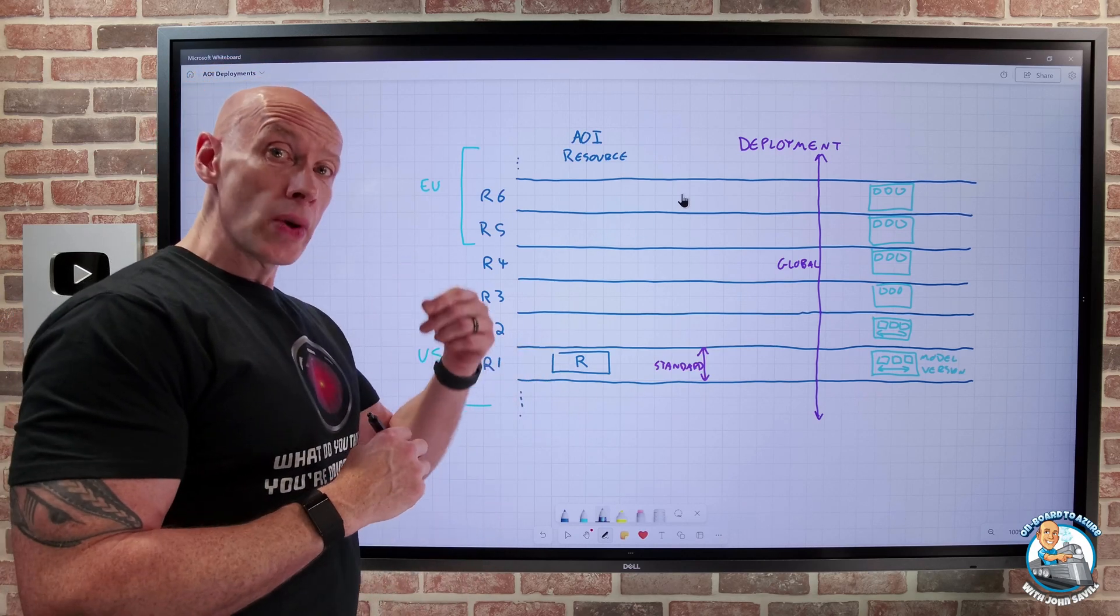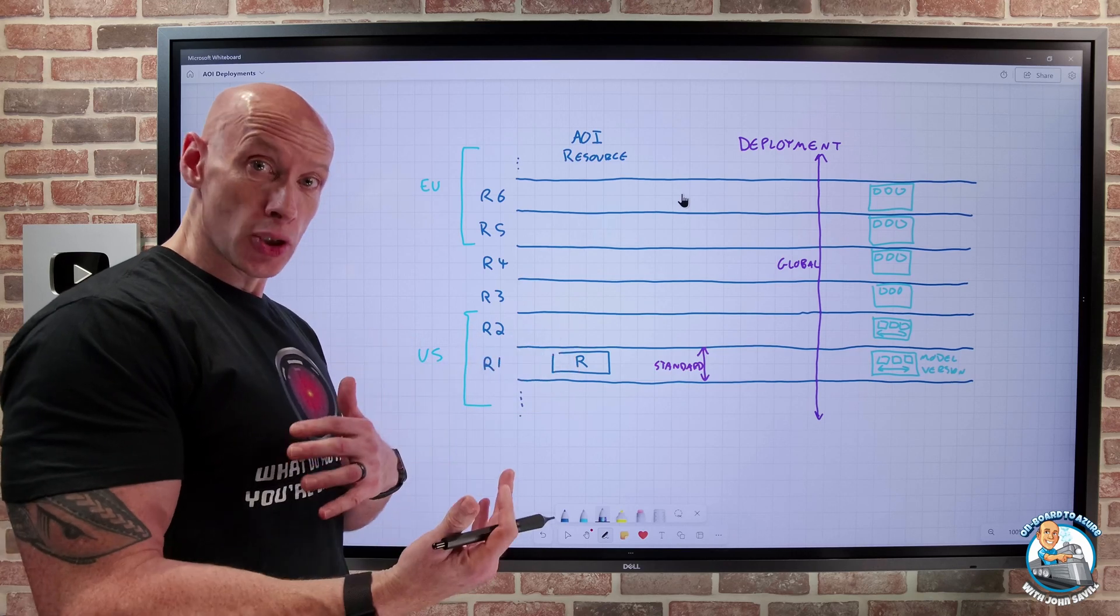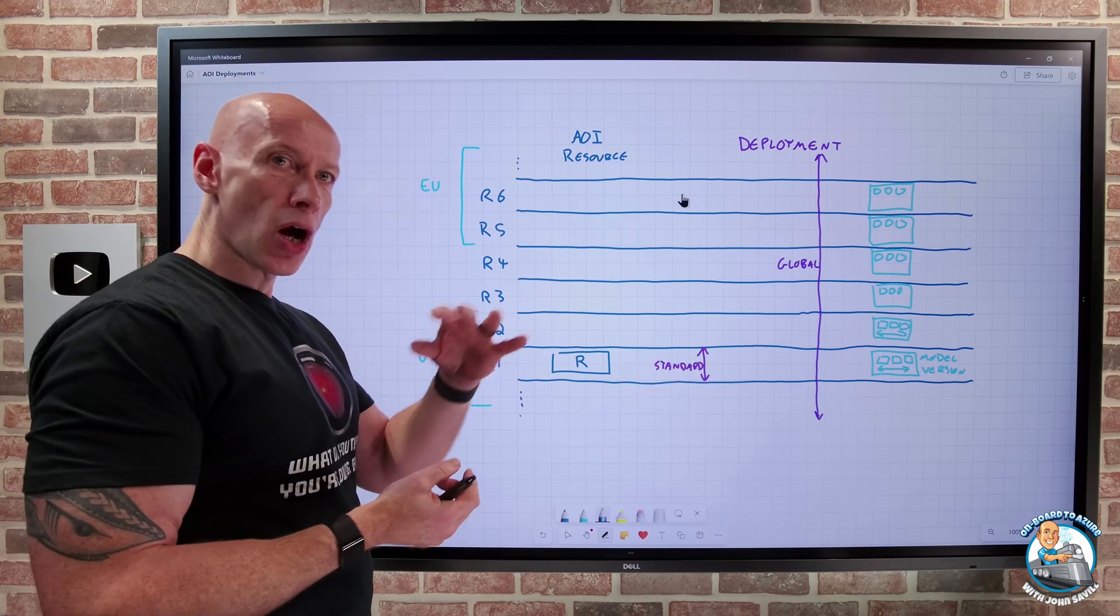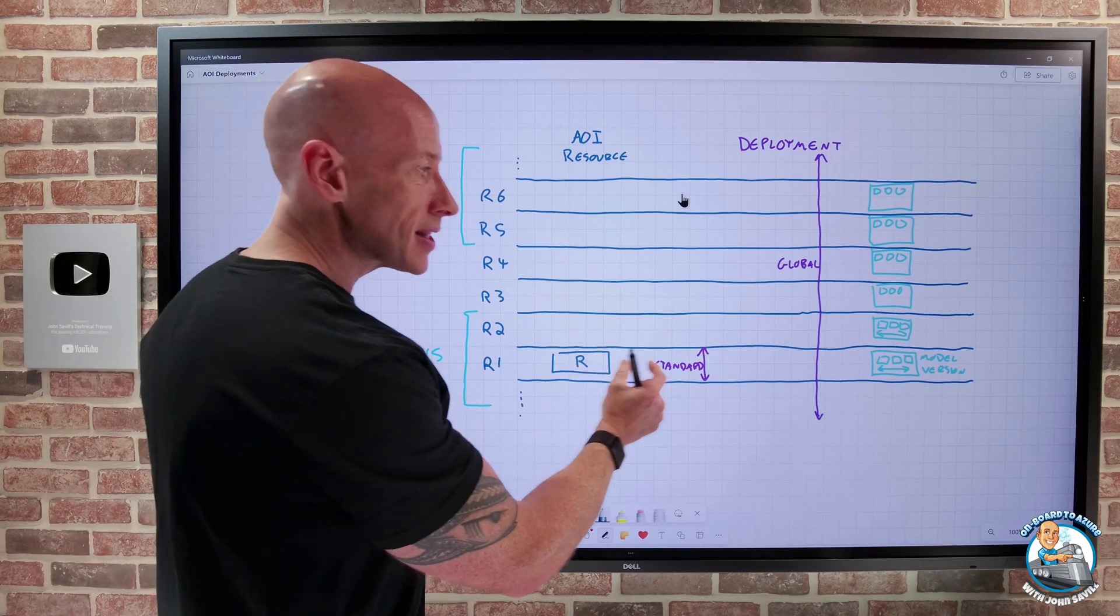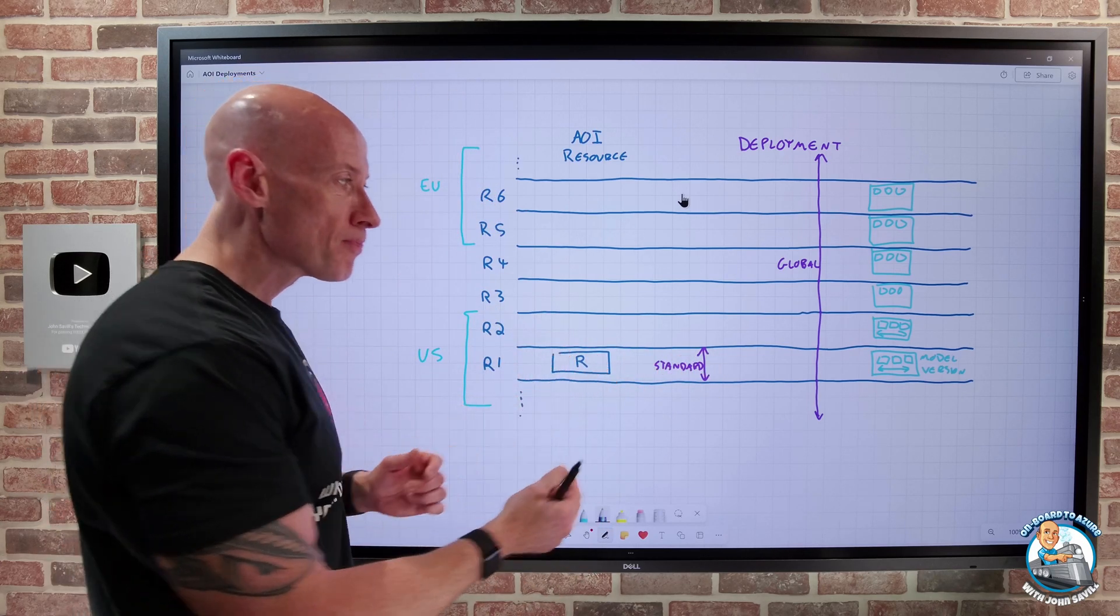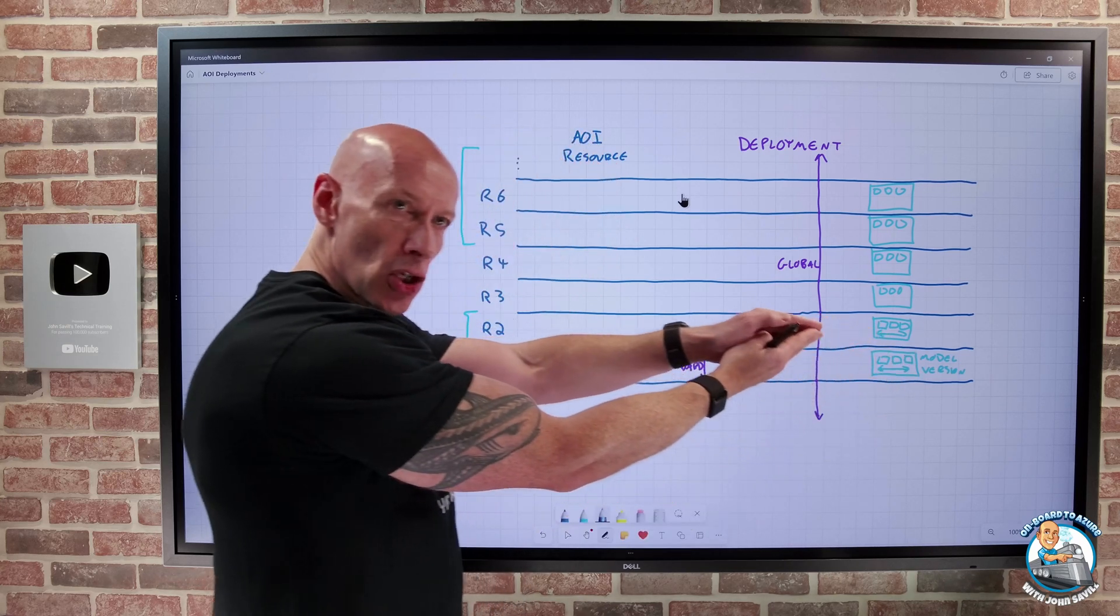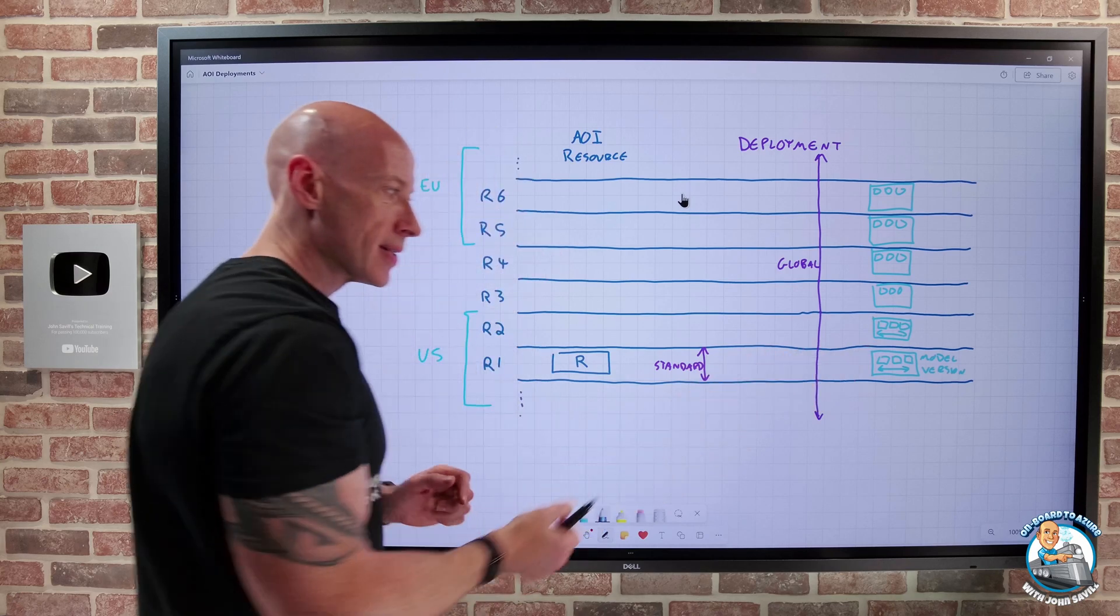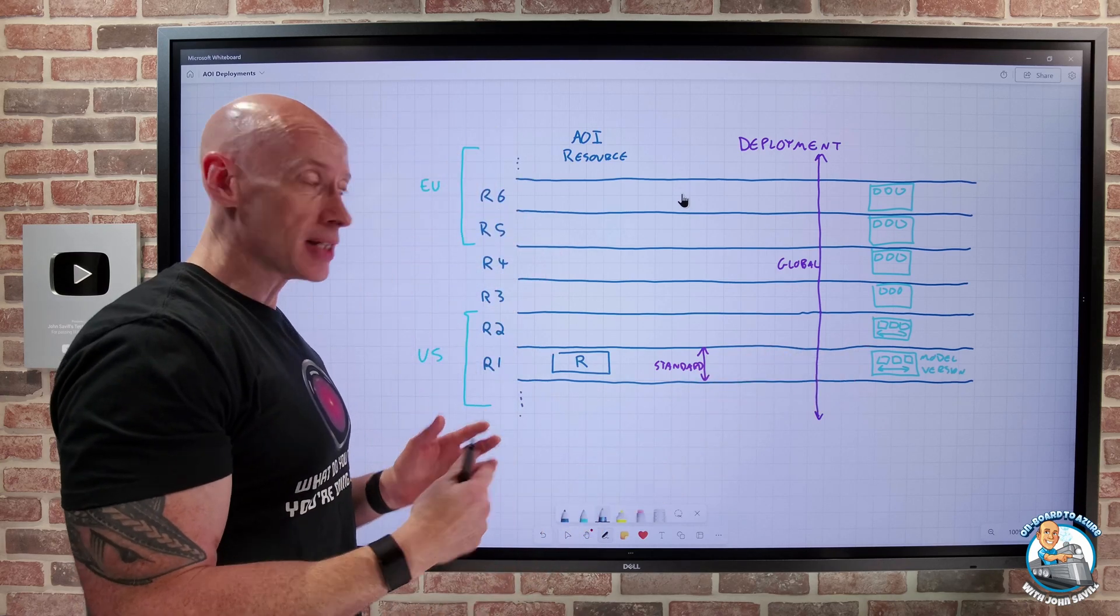And then for each model we deploy, we have options. Now traditionally we think of standard, and again this is both pay-as-you-go and PTU, which means the capacity pool for the model and the version of the model you're deploying has to be in that same region. So the scope of the instances that you can leverage is just the ones in that particular capacity pool.